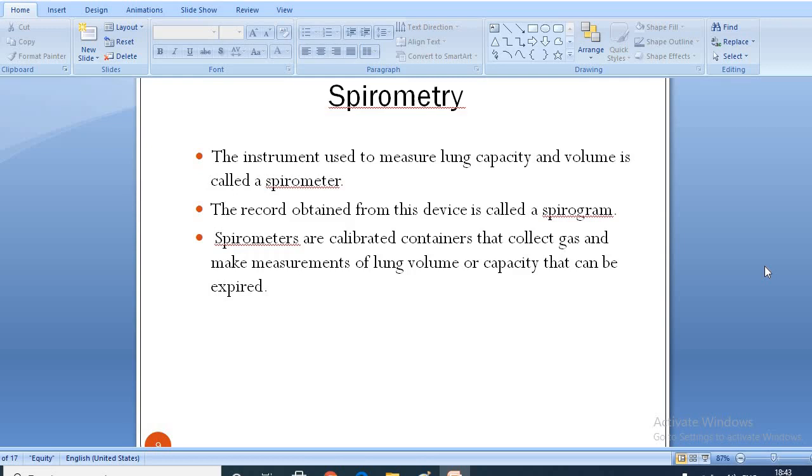The instrument used to measure lung capacity and volume is called a spirometer. Basically, the record obtained from this device is called a spirogram. Spirometers are calibrated containers that collect gas and make measurements of lung volume or capacity that can be expired. By adding a time base, flow dependent qualities can be measured. The addition of gas analyzers makes a spirometer a complete pulmonary function testing laboratory.